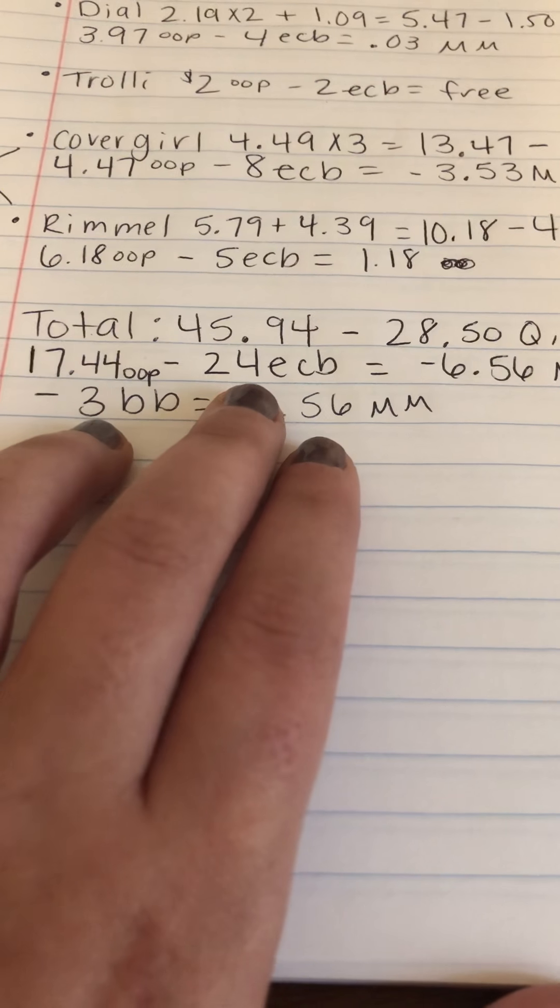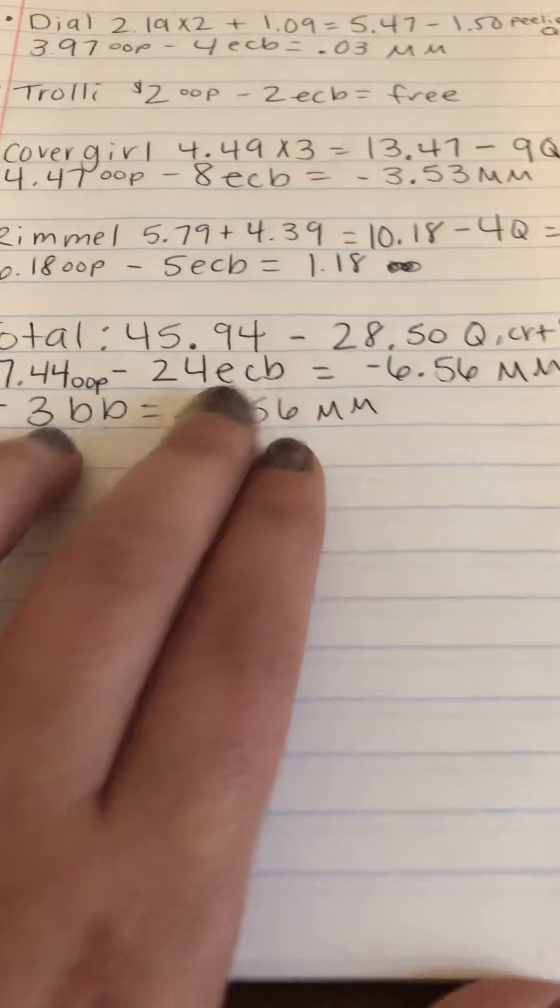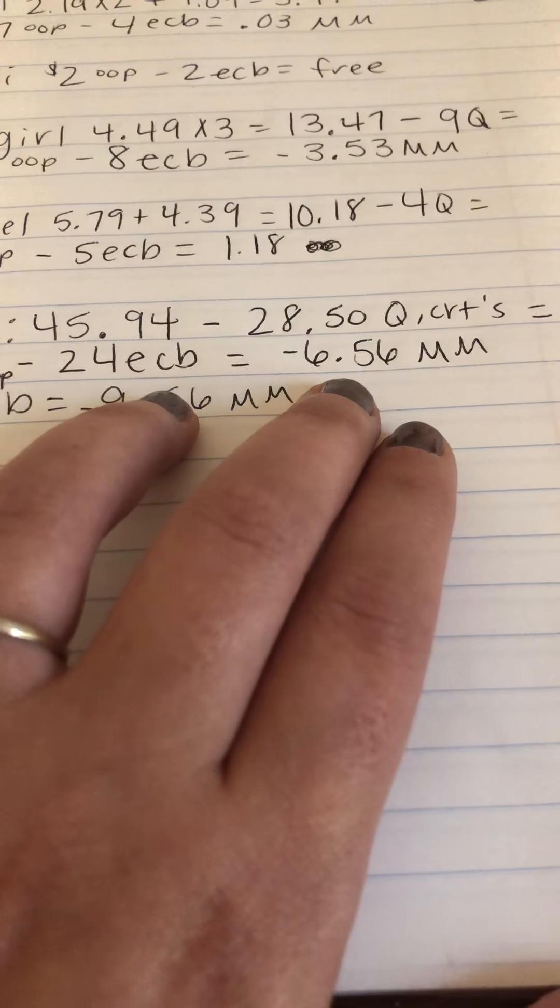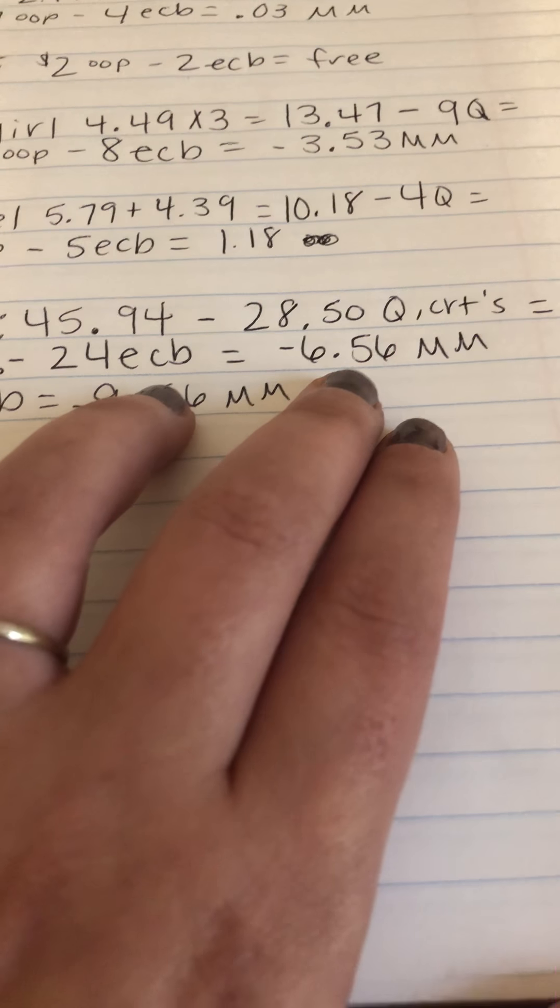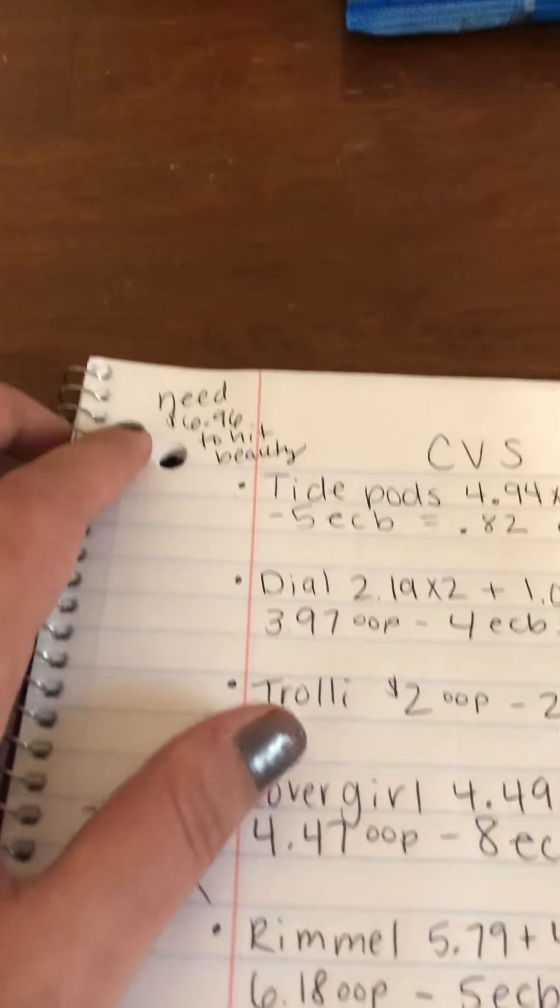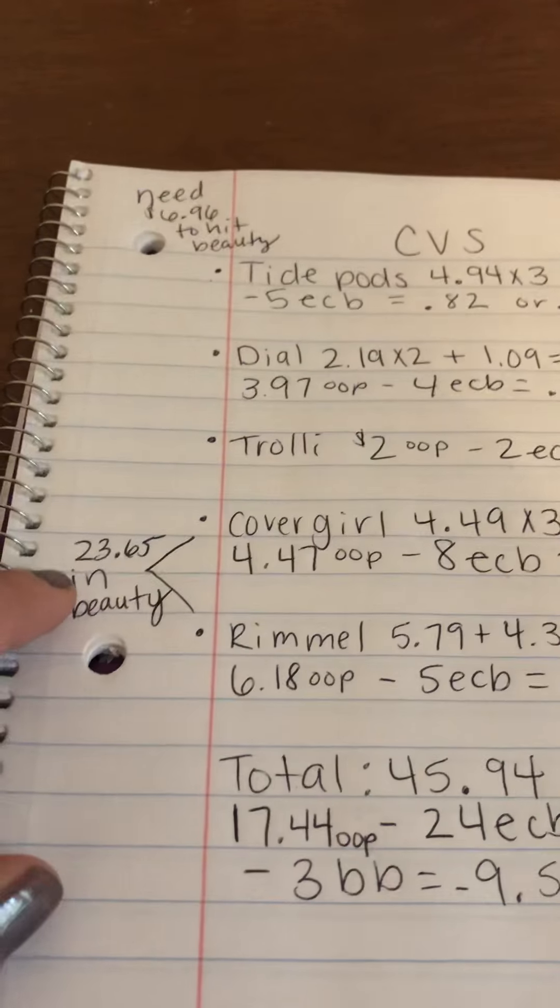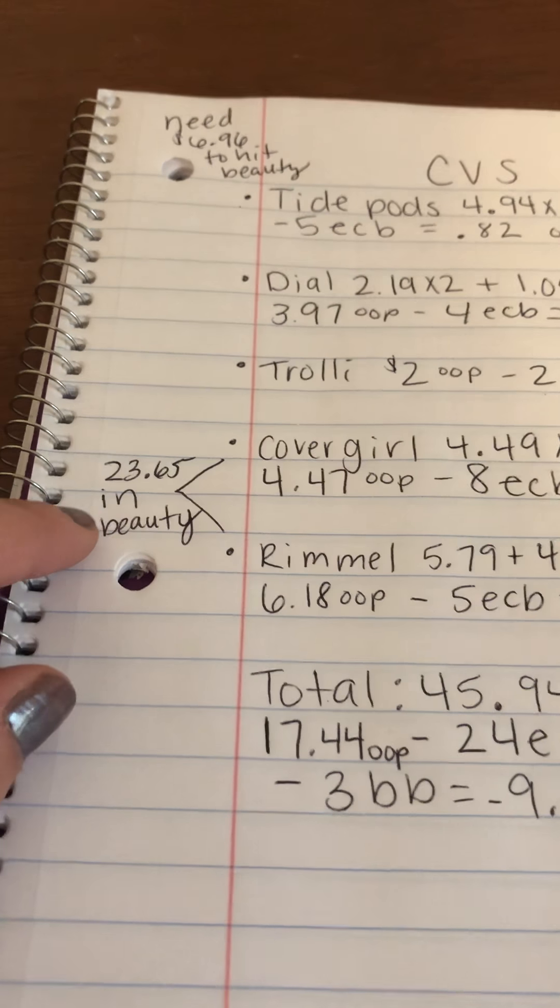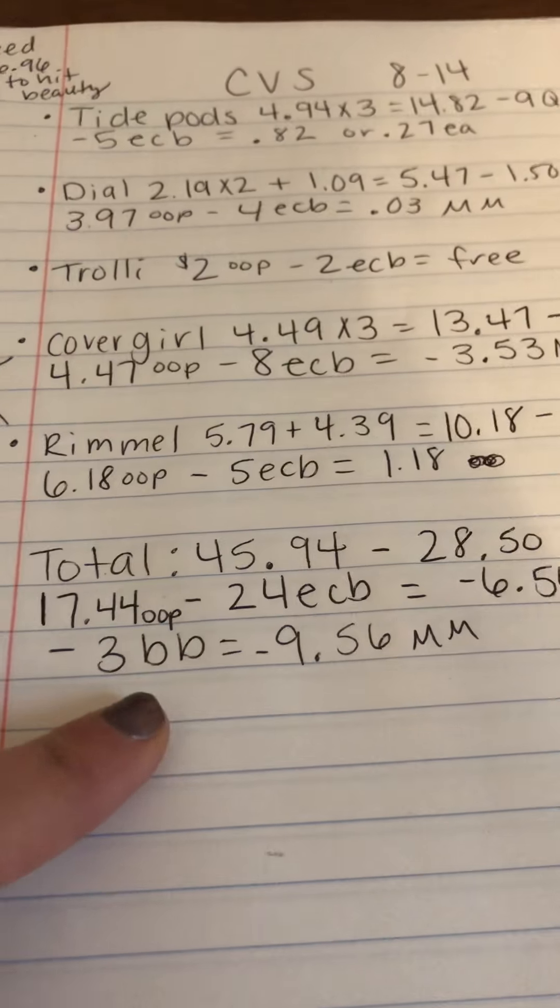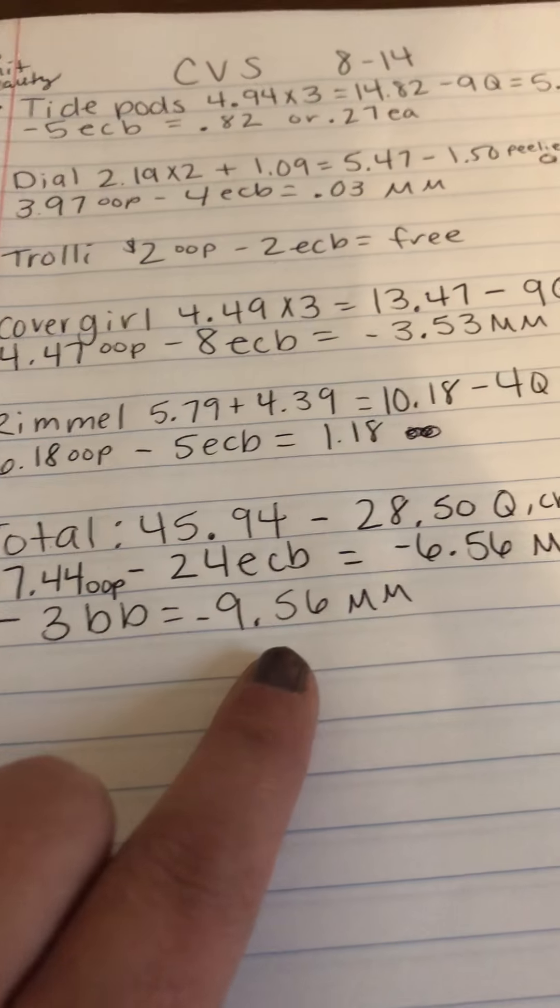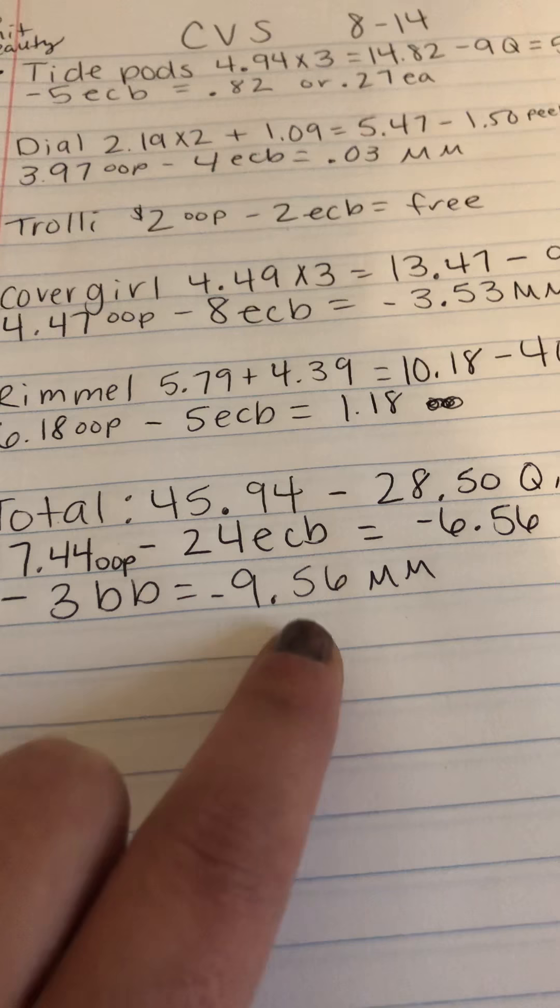So $17.44 was the total after coupons for everything. I did roll $15 in extra bucks for this transaction. I got $24 in extra bucks, making it a $6.56 money maker in store. But remember, I told you I only needed $6.96 to hit beauty. I have $23.65 in beauty here. So I will get back a $3 beauty buck, making it a $9.56 money maker.